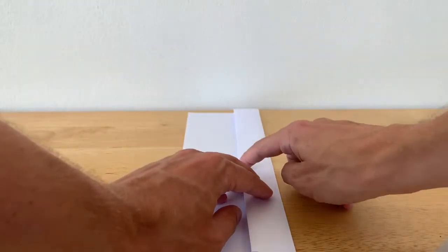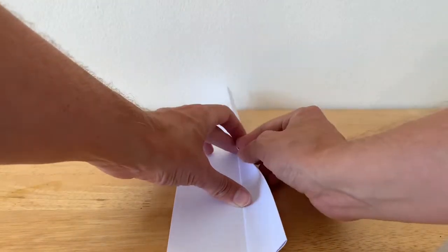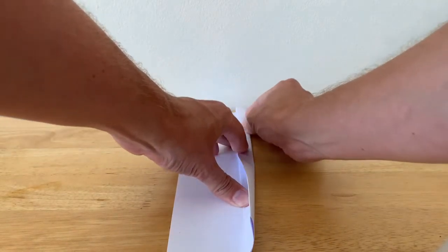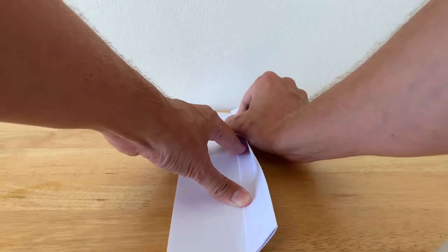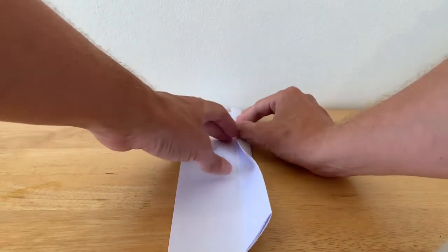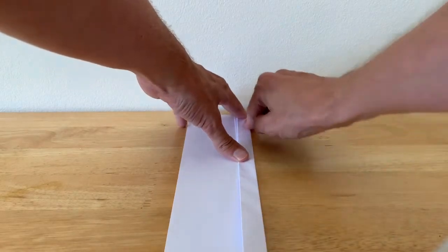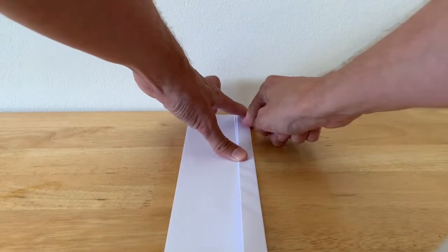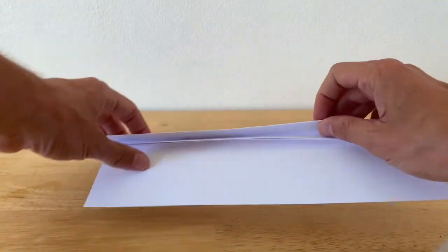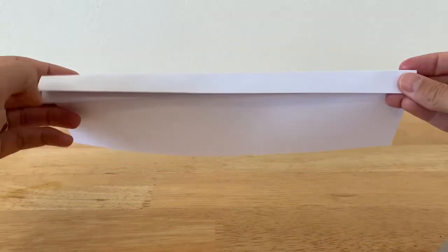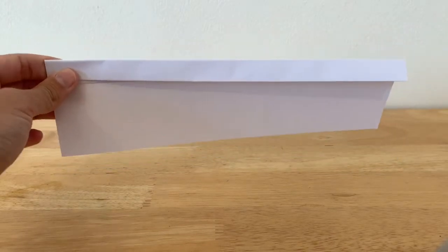So we take this bit here. This bit here starts getting a bit trickier because there's more bits of paper now, and again we need a nice clean fold. So it should now look like this.